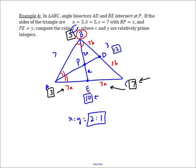And that is how you go through and use mass points combined with angle bisector theorem to find out what the ratio of BP to PE is.